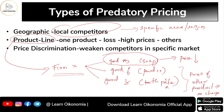The next type is price discrimination, which is very much possible in a monopolistic market structure. A monopolist sells the same commodity at different prices to different consumers. Price discrimination can be first degree, second degree, or third degree, and it weakens competitors in specific markets — making it another form of predatory pricing.